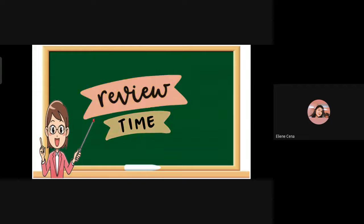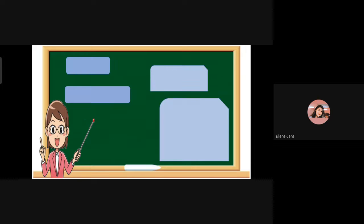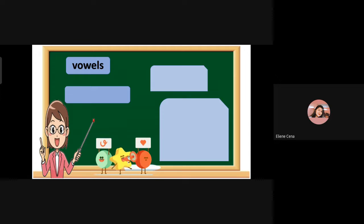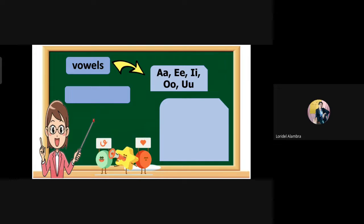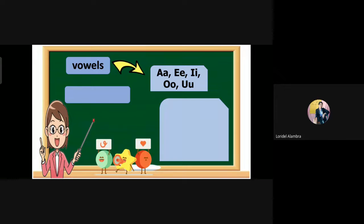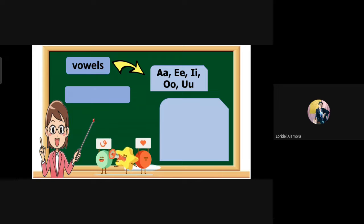Before we move on to our next lesson, what are the vowels and consonant letters? How many vowels do we have? Five. Very good. We have five vowels, and these are A, E, I, O, and U.